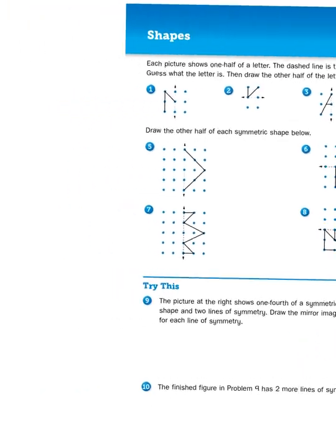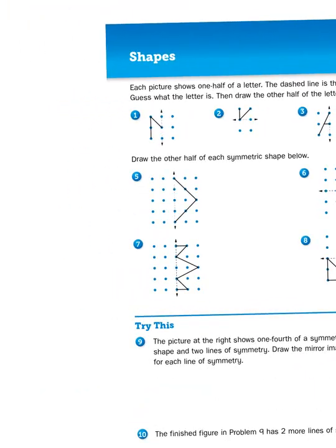Symmetry is basically when you have a figure that can be drawn by dividing it into two parts that are mirror images of each other. The two parts look alike but they face opposite directions.